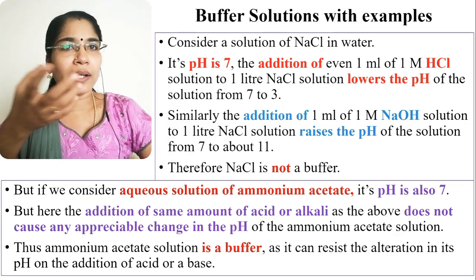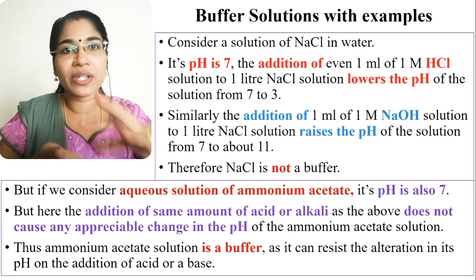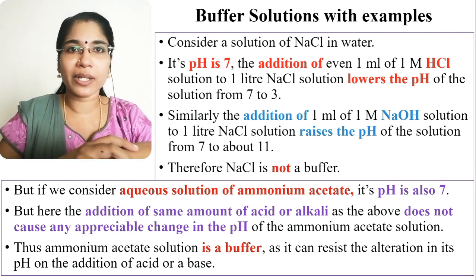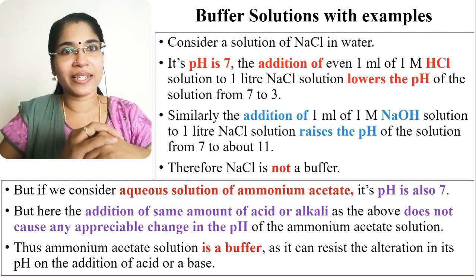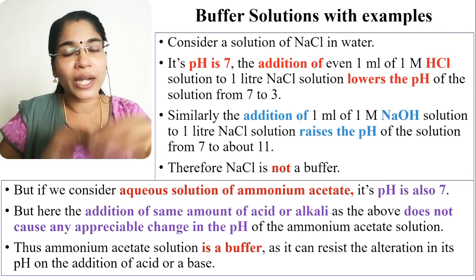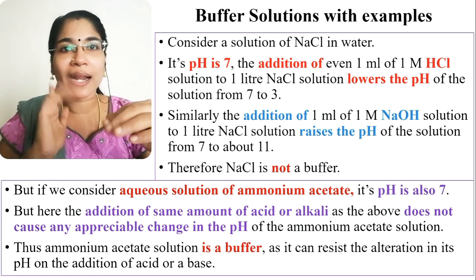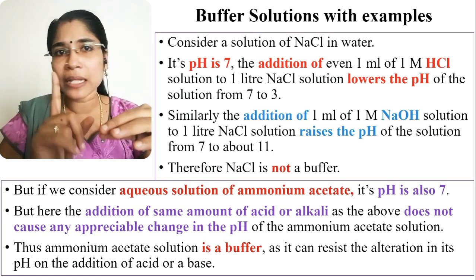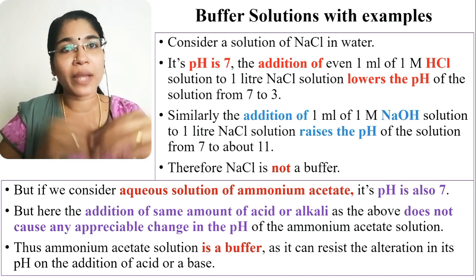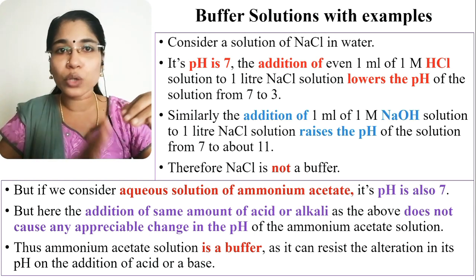We will consider a solution of NaCl in water. NaCl is dissolved in water — what is the pH? The pH is 7. That solution — one liter solution. If we are adding 1 ml of 1 molar HCl, that will lower the pH of the solution from 7 to 3.